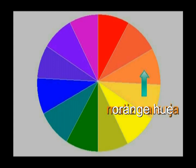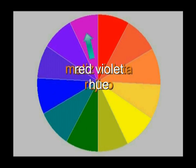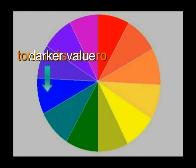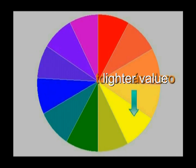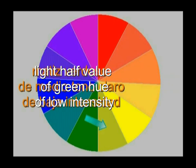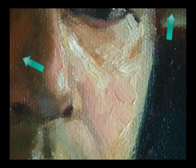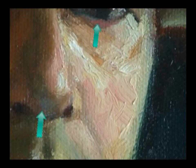This color has an orange hue, this one a green hue, this one a reddish violet hue, this one a darker value hue, this one a lighter value, this one a high intensity red hue with a half value, and this one a low intensity greenish hue with a light half value. Complementary colors, the gray colors, color temperature and their contrasts.